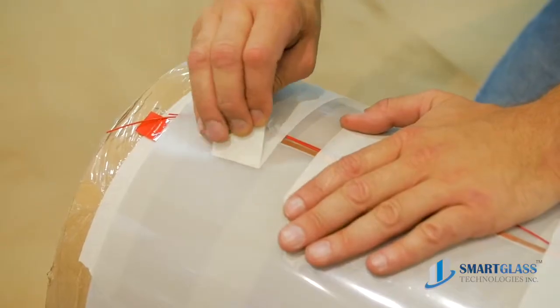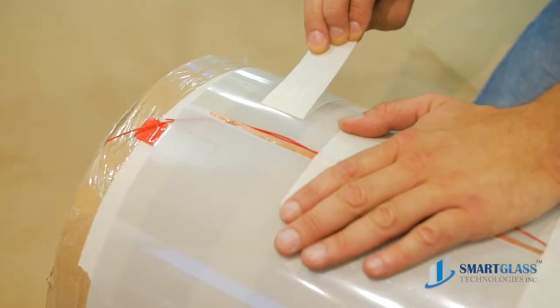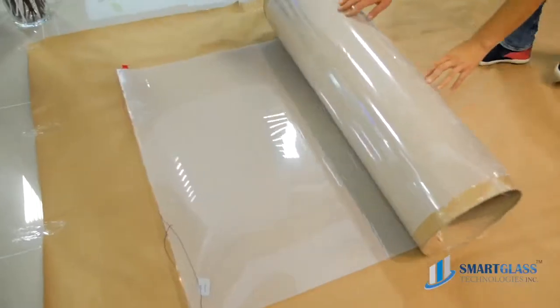Remove the shipping tube from the package. Carefully remove the protective tape from the film without removing the protective layer. Unroll the film.